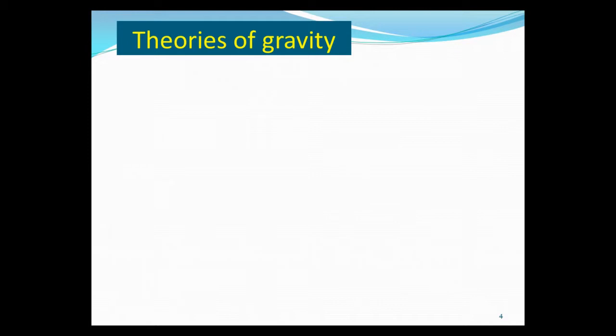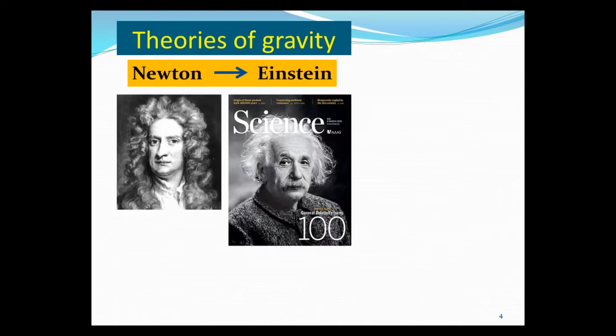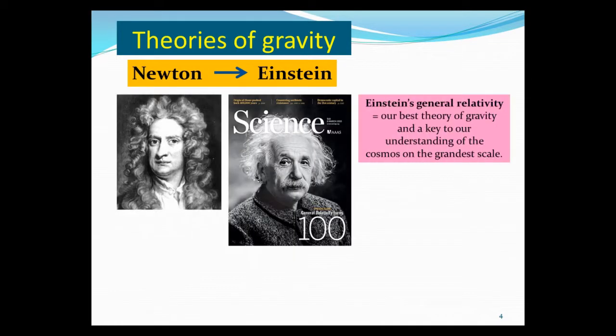As GR is a theory of gravity, of course, it means Einstein's theory supersedes Newton's theory. GR is really our best theory of gravity now, and it's key to our understanding of the cosmos on the grandest scale. This year, 2015, also happens to be the 100-year anniversary of when Einstein first succeeded in formulating the GR theory, which we can date very precisely in November 1915. So there are all kinds of celebrations and meetings. This Science magazine cover is a special issue of GR at 100. It contains quite a few interesting articles that I recommend for you to read.